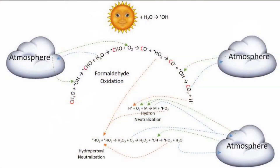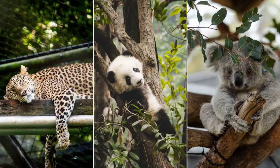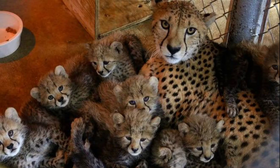What is the effect of formaldehyde on the environment? In the atmosphere, it usually breaks down quickly to create formic acid and carbon monoxide, which can also be harmful substances. When animals are exposed to formaldehyde, it can make them sick, affect their ability to breathe, and reduce their lifespans.